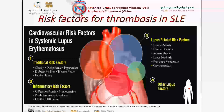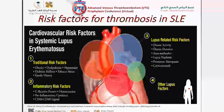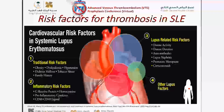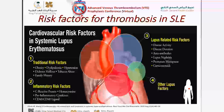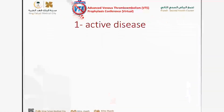Other factors relate to the disease itself. Mainly, disease activity has been associated with increased risk of thrombosis, and particularly lupus nephritis is clearly a significant independent risk factor for thrombosis.